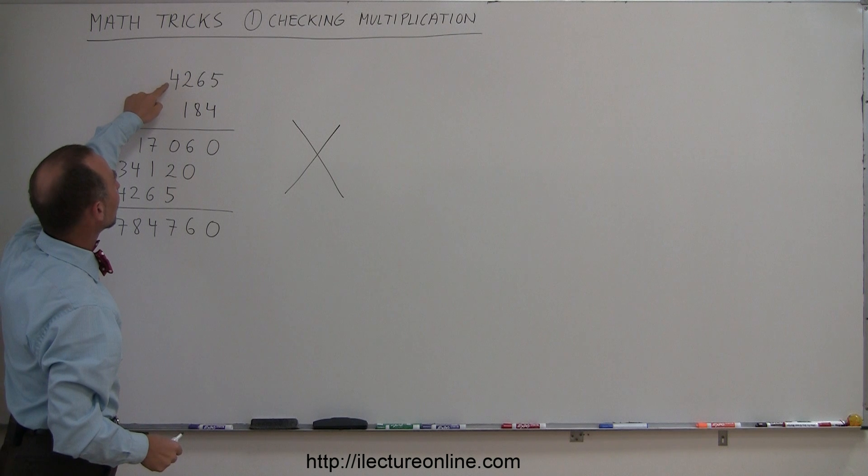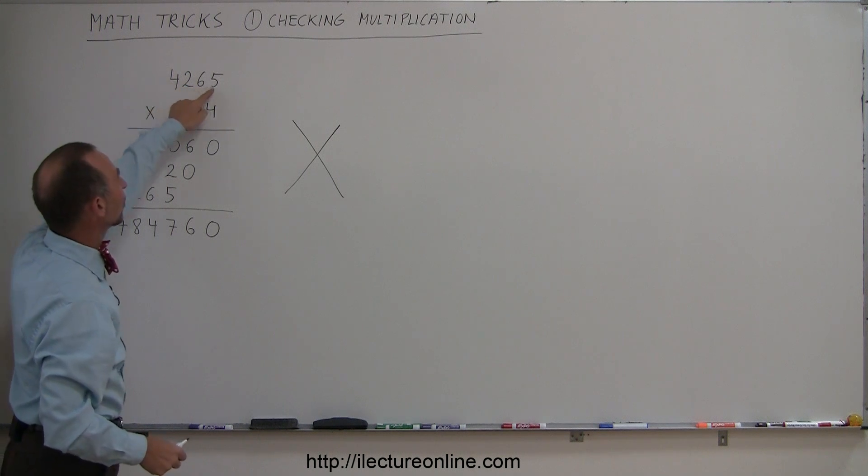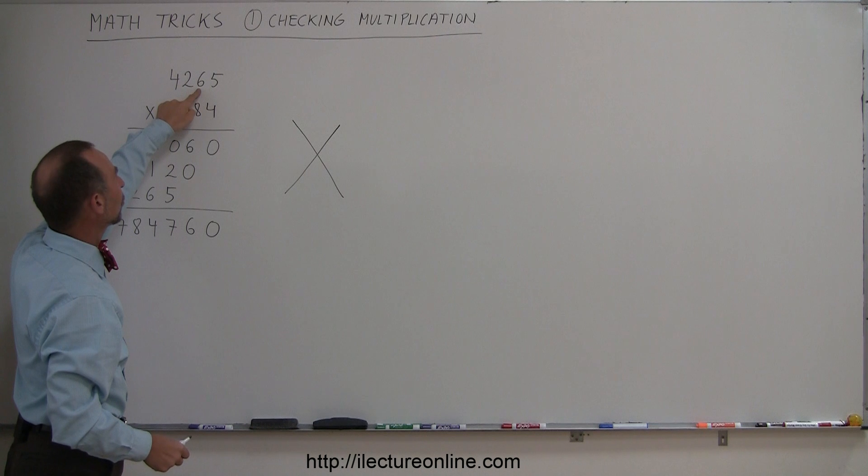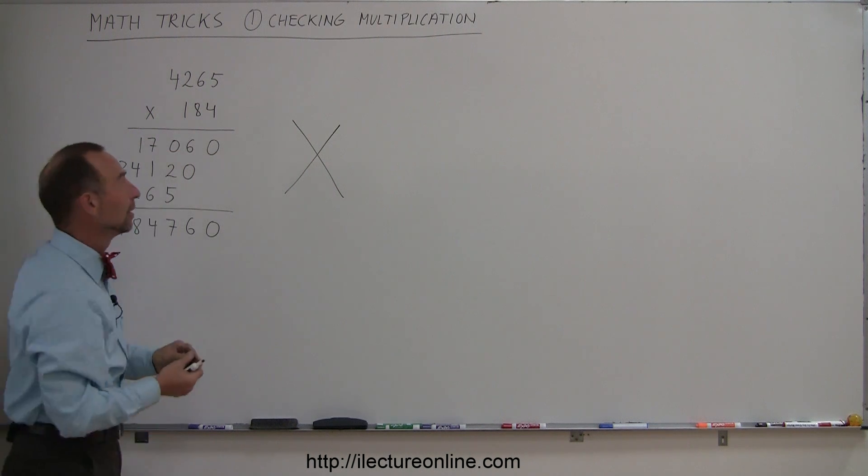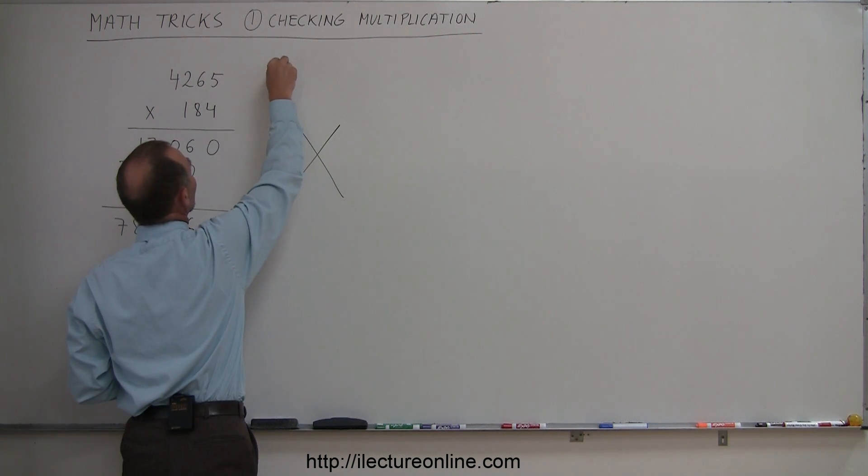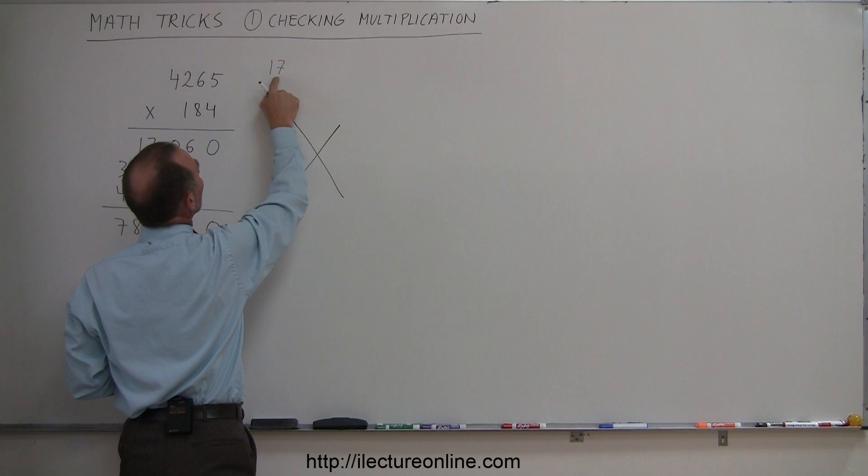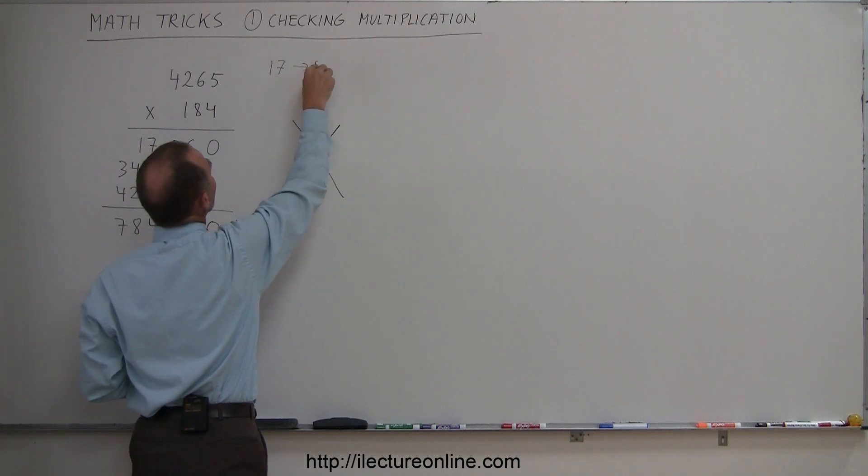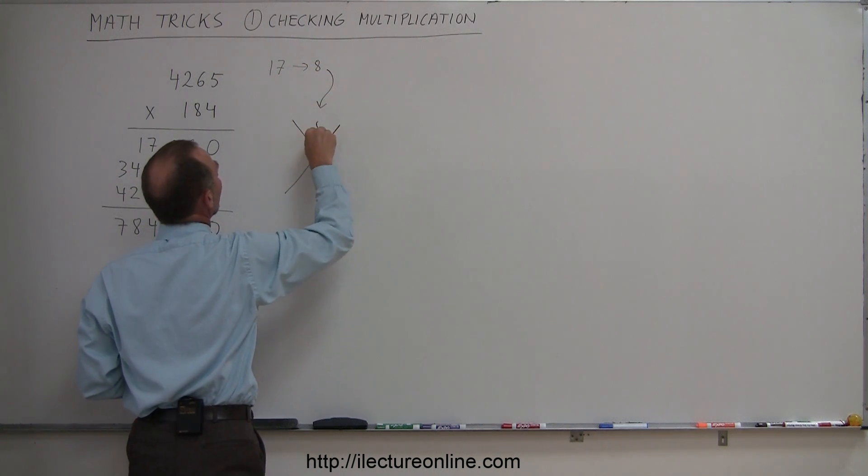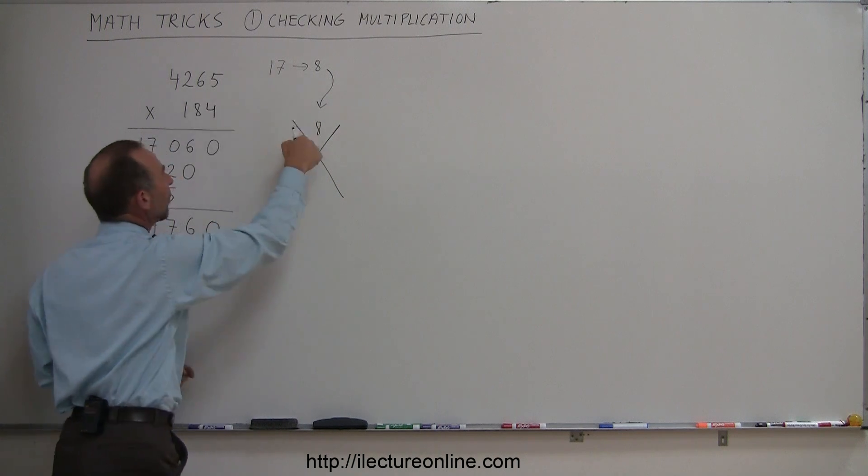Add these numbers together: 4 plus 2 plus 6 plus 5, so 4 plus 2 is 6 plus 6 is 12 plus 5 is 17. You get 17, then add those two numbers together and you get 8, and that's the number that goes in the very top right here. So when you add all those up you get 8.